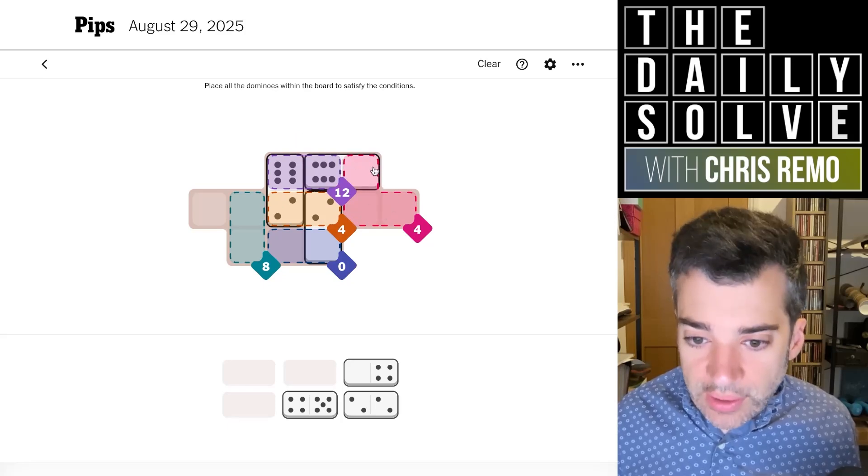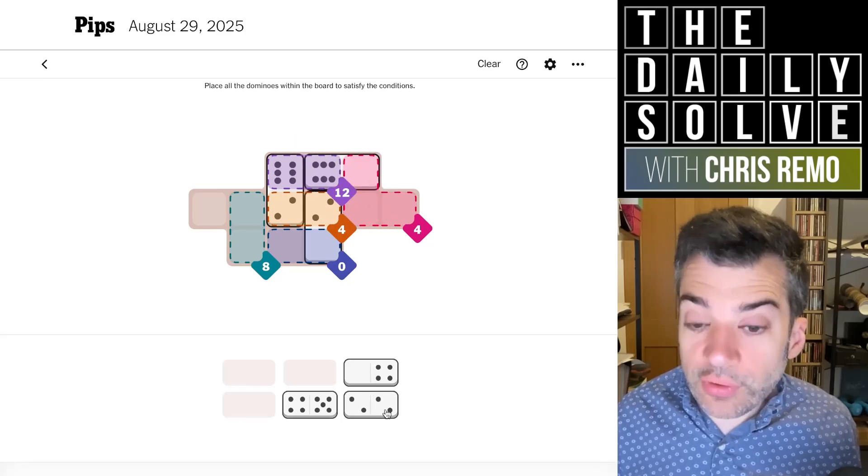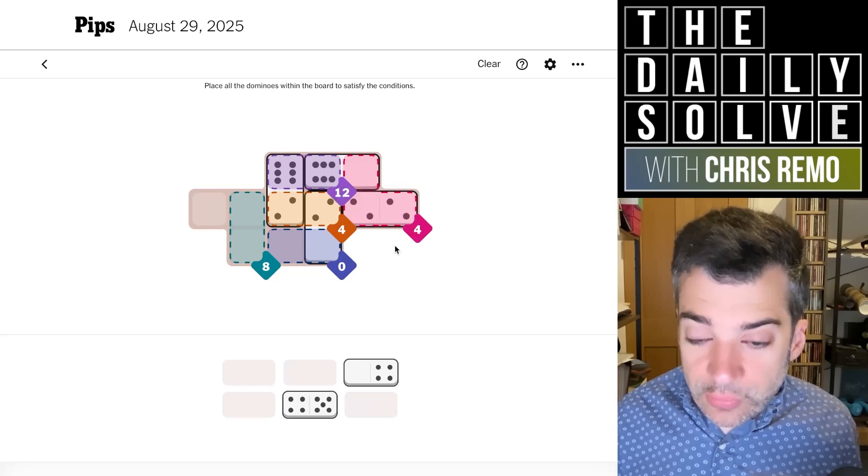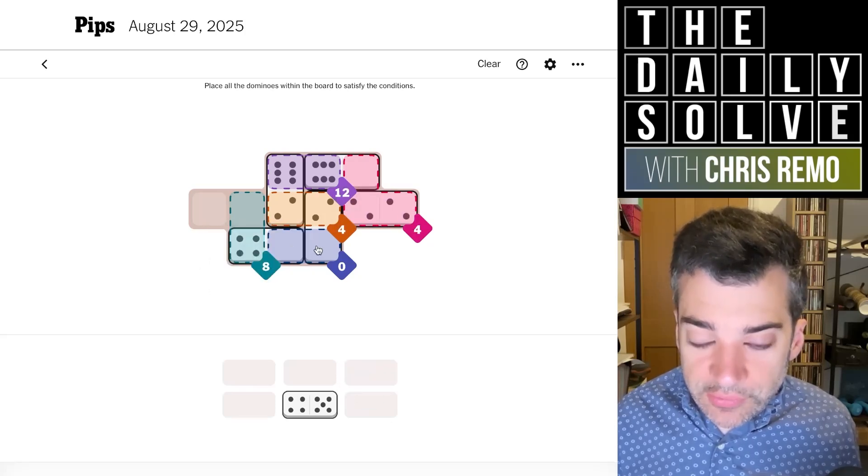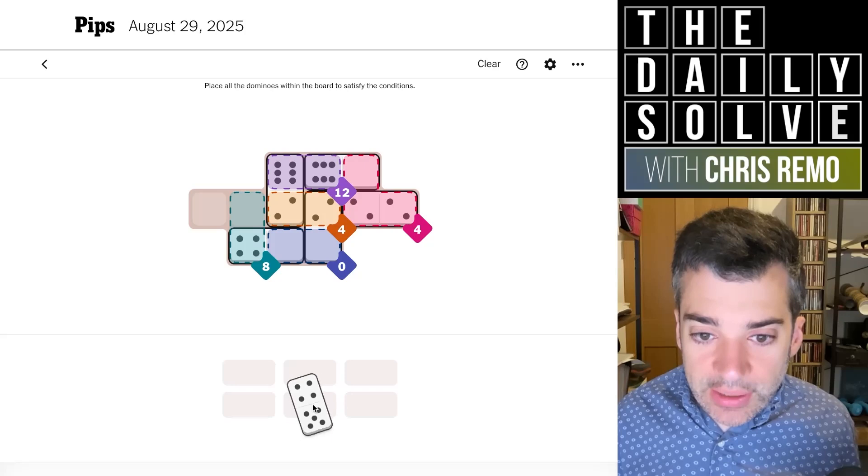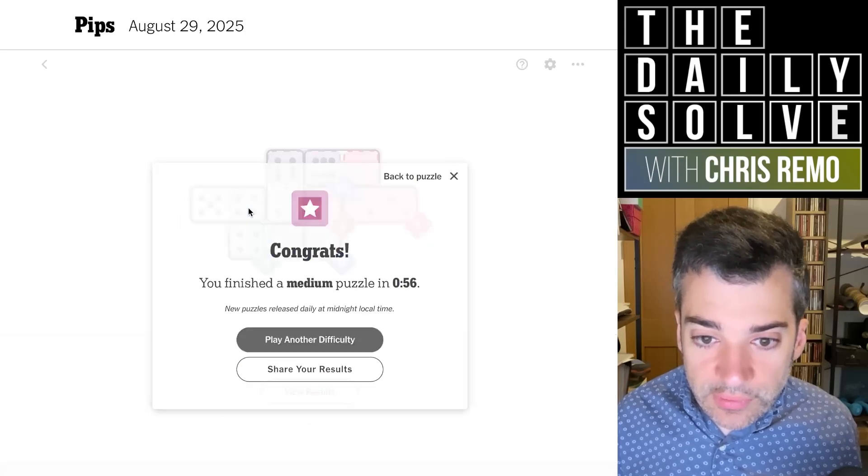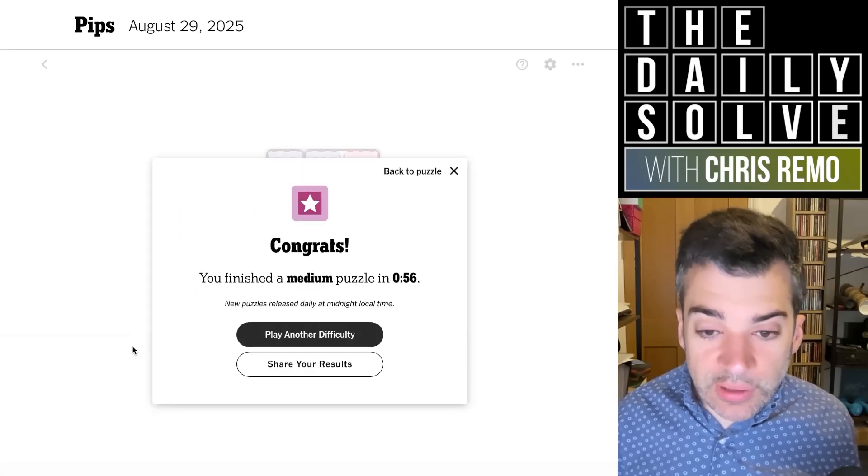Now the four has one zero, which means we need a total of four remaining. So our double two goes there, which means the other zero fills the zero region. And now we have an eight which will be filled with two fours. That was the medium, not too bad.